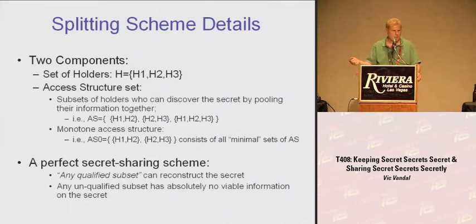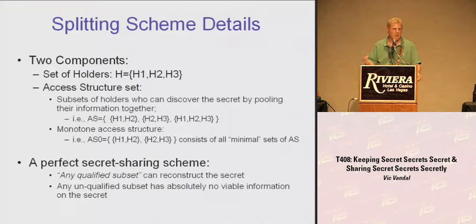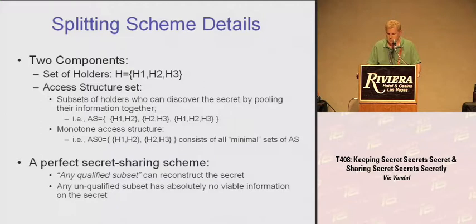If holder one and holder two get together, they can recover the information. Holder two and three can recover it. All three together can recover it. H1 and H3 in this scenario cannot recover the data. A perfect secret sharing scheme is where any qualified subset can reconstruct the secret, and any unqualified subset — such as H1 and H3 in this example — has no viable information on the secret.